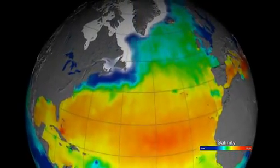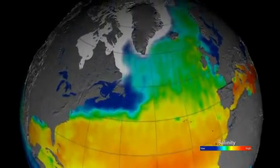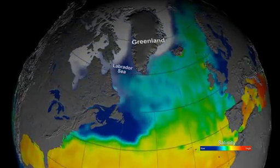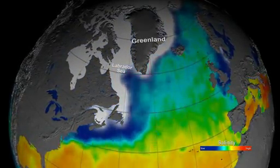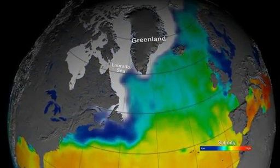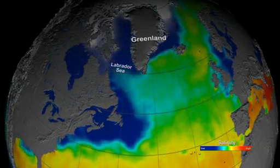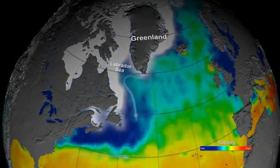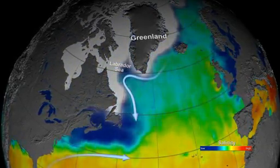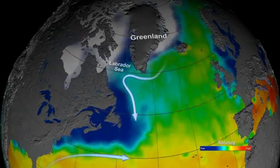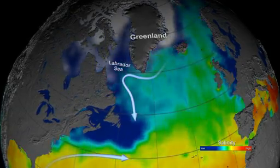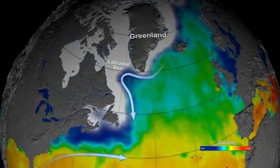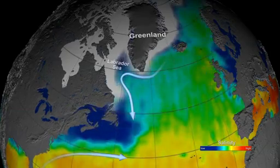At high latitudes, the seasonal melting of sea ice causes a sharp decrease in sea surface salinity. We see examples of this in the Labrador Sea and the coastal waters that surround Greenland. In spring and summer, surface currents transport the low salinity water south, where it meets warmer and saltier water carried north by the Gulf Stream.